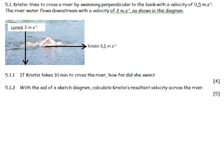Kristen tries to cross a river by swimming perpendicular to the bank with the velocity given. The river flows downstream, so there's two vectors in essence. One of them is going that way, 0.5, and at the same time, one is going that way, at 2 meters per second.